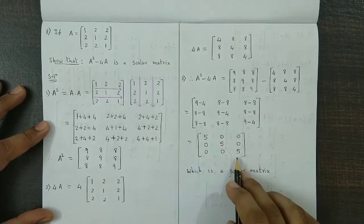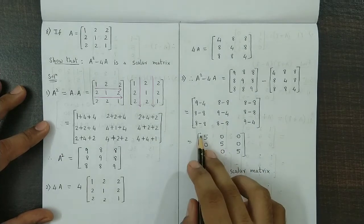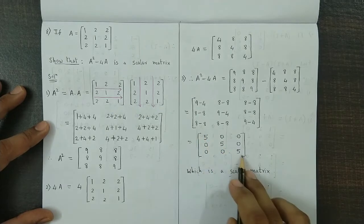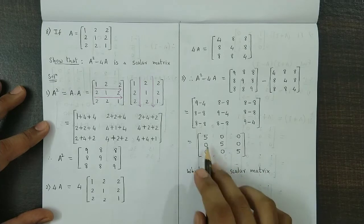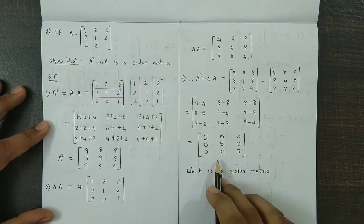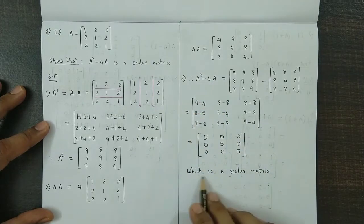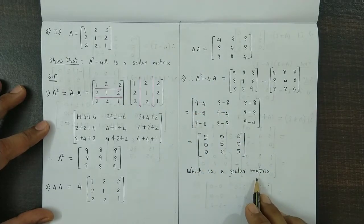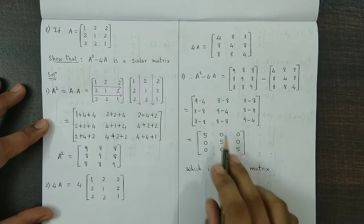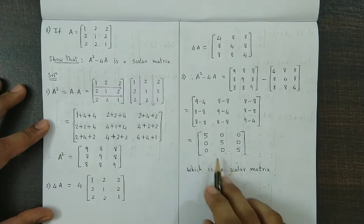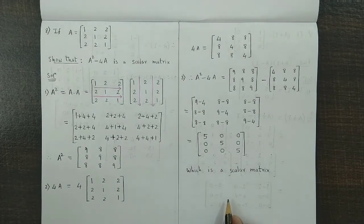Now if you observe, A square minus 4A is a square matrix with diagonal elements being identical. All are 5, and the remaining non-diagonal elements are all 0. So therefore we could say A square minus 4A is a scalar matrix. Remember it's a square matrix, diagonal elements being identical and non-diagonal elements being 0.